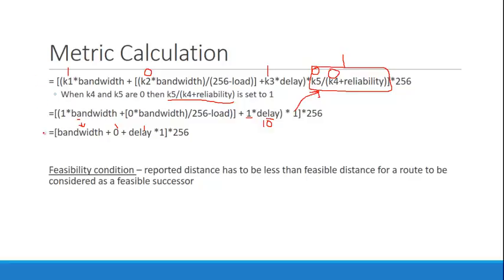So by default, the EIGRP metric calculation ends up being bandwidth and delay. You can change those values using the metric weights command, but you only want to do that if you really need to. EIGRP works perfectly at the default values, so unless you really know what you're doing, don't change the K-values.